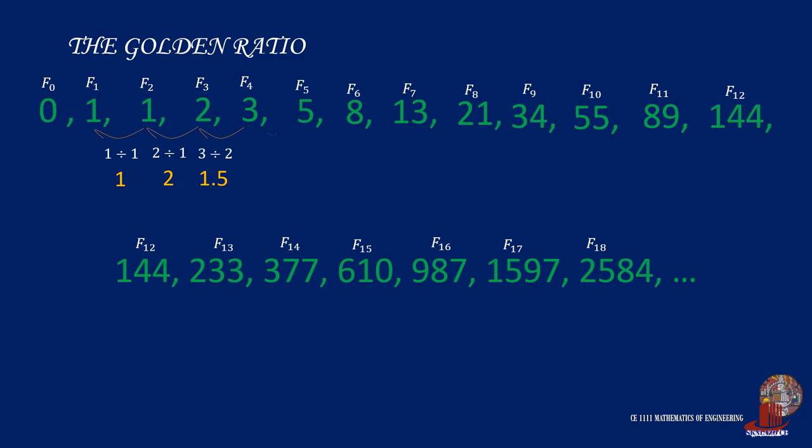Now 3 divided by 2 is 1.5. Also, 5 divided by 3 is 1.67. We proceed with 8 divided by 5 as 1.6. Then 13 divided by 8 is 1.625. Also, 21 divided by 13 is 1.615.